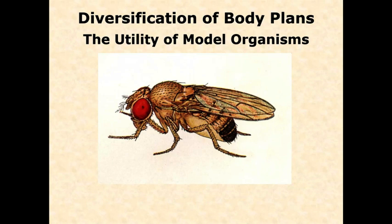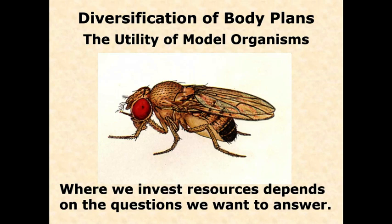However, if we want to know about differences between organisms — changes, evolution, what's the same, what's different — we need to broaden our sampling somewhat. It's an important endeavor to continue to work on model organisms, and there's been a lot that's come out of them. However, it's also important, especially if we're going to understand things in context, that we expand beyond the single organism and look at other organisms.